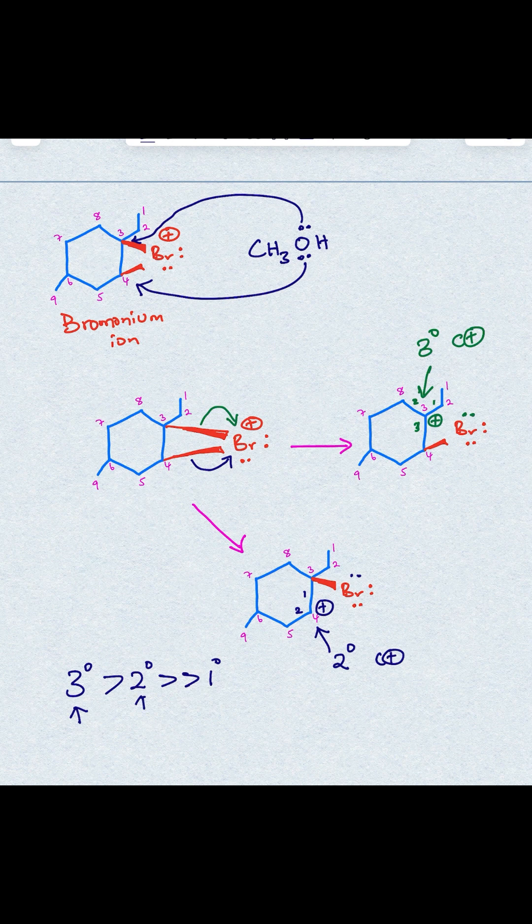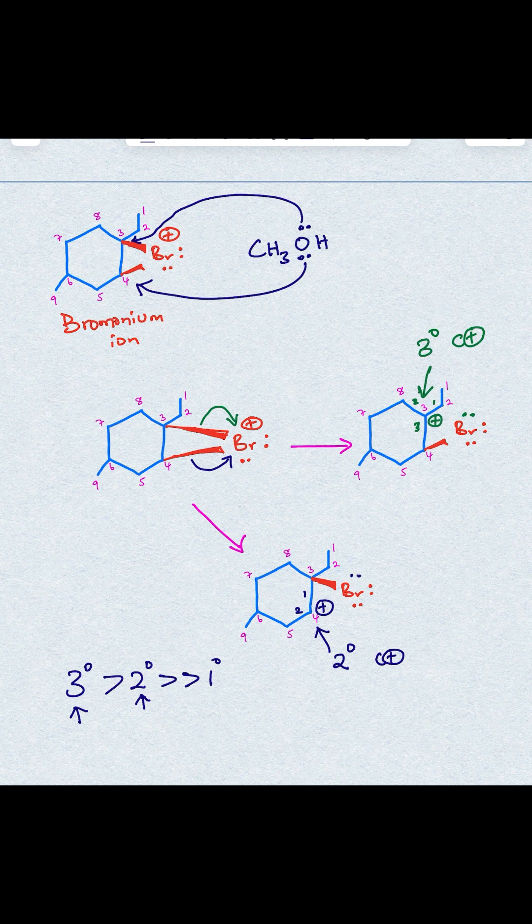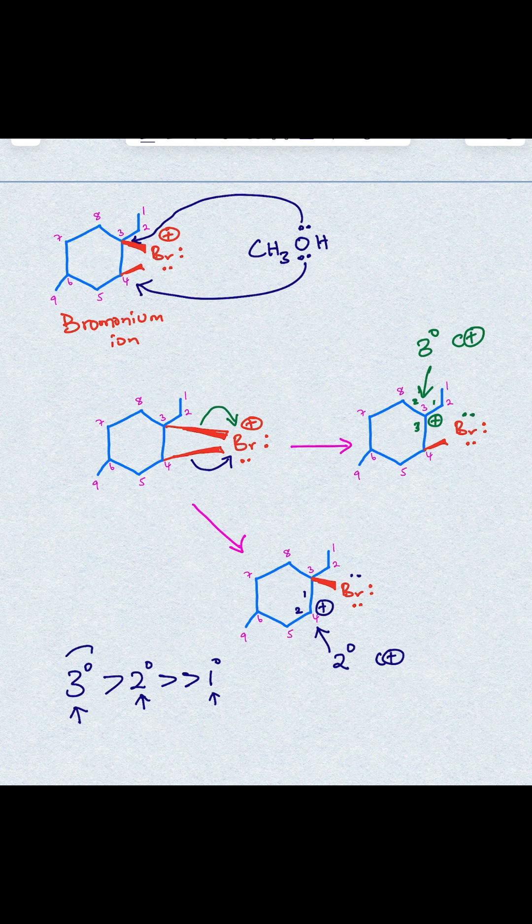Secondary carbocation has 2 alkyl groups, so that means less electrons are pushed towards the carbocation center, and then of course primary carbocation has only 1 alkyl group, and because of that, tertiary carbocation is more stable.